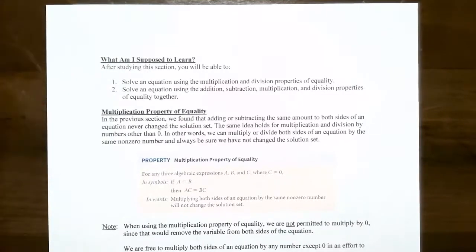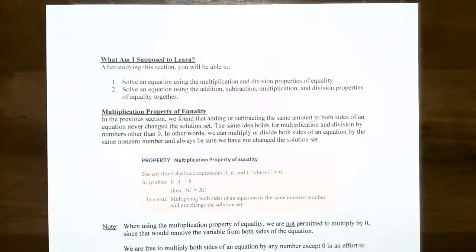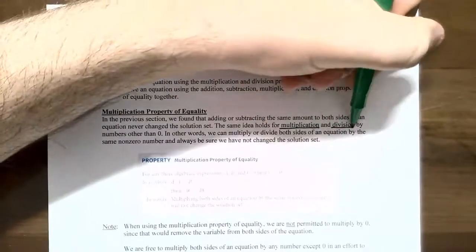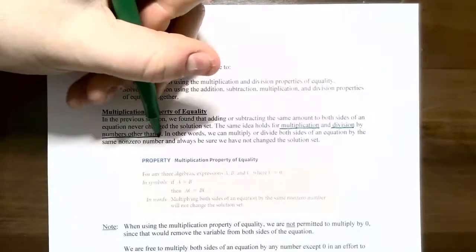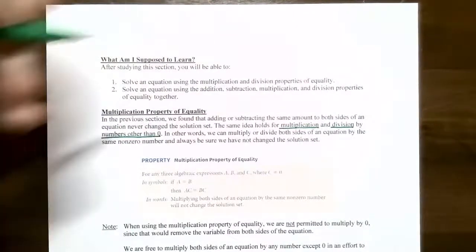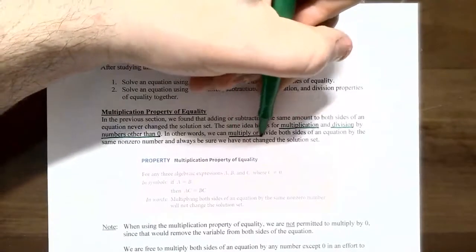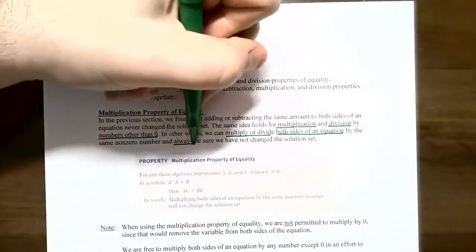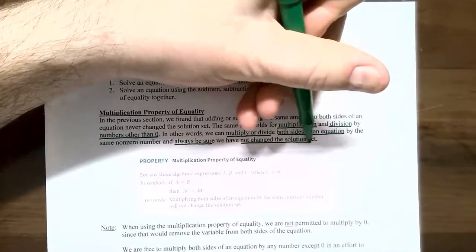In the previous video, we found that if you add or subtract the same amount to both sides of the equation, then you have what's called an equivalent equation and the solution remains the same. The same idea holds for multiplication and division as well, so you can multiply or divide both sides of an equation by a number that's not zero, and you will always have the solution set remain the same.